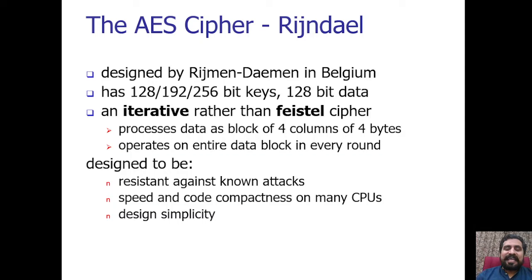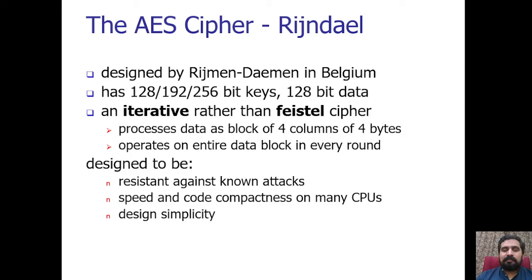What is the AES cipher? As shared previously, AES is designed by Rijmen and Daemen, who are Belgian researchers. The name Rijndael is selected from the first half of both name words. It contains three different variants: the 128-bit variant AES, the 192-bit variant AES, and the 256-bit variant AES. The main difference among all three variants is the key size.